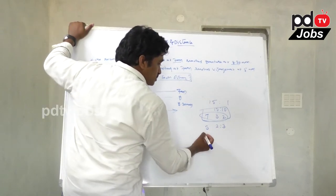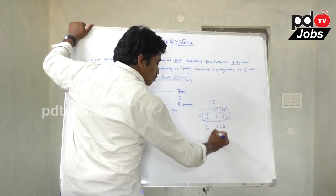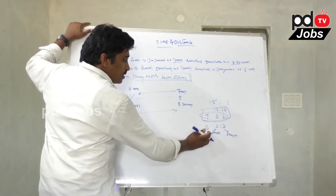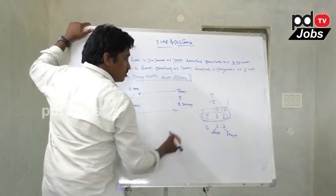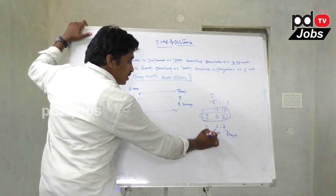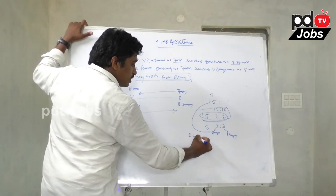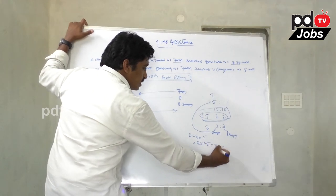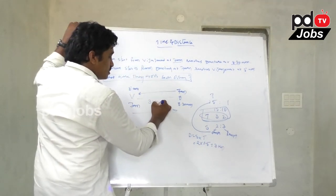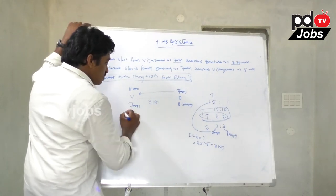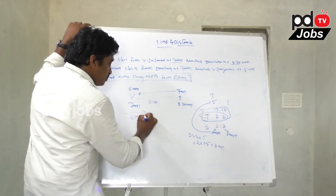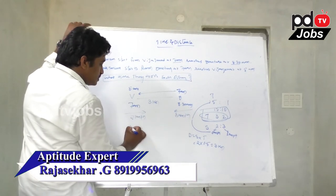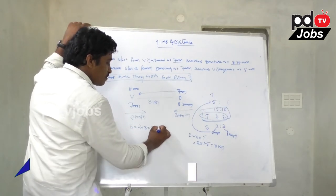The speed ratio is 2:3. So let speed of person 1 be 2 kmph and speed of person 2 be 3 kmph. Distance equals speed into time: 2 kmph multiplied by 1.5 hours equals 3 km. This is the total distance between Vijayawada and Guntur. Since both travel in opposite directions, relative speed is 2 plus 3 equals 5 kmph.